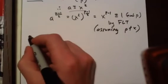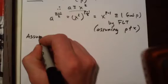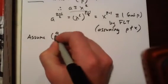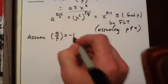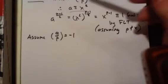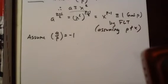Now let's assume A over P as minus 1. So we've got to show that A to the P minus 1 over 2 is negative 1 in this case.